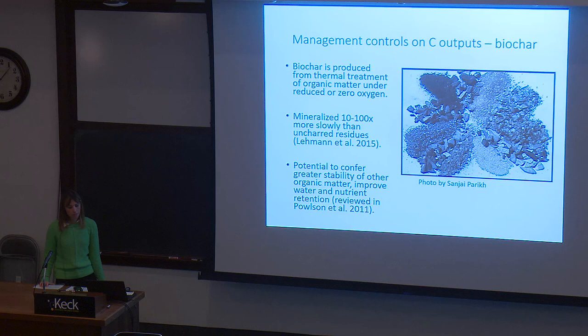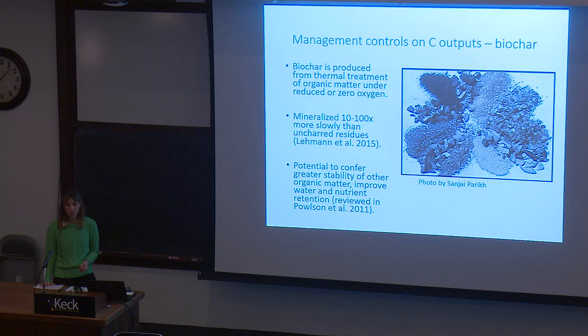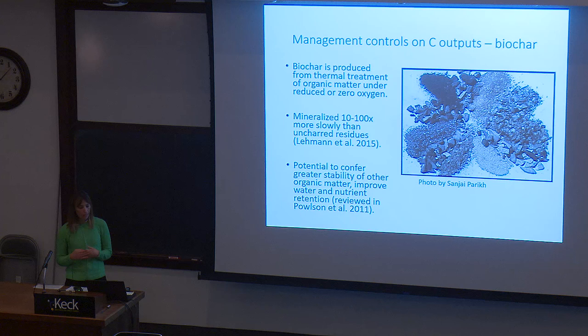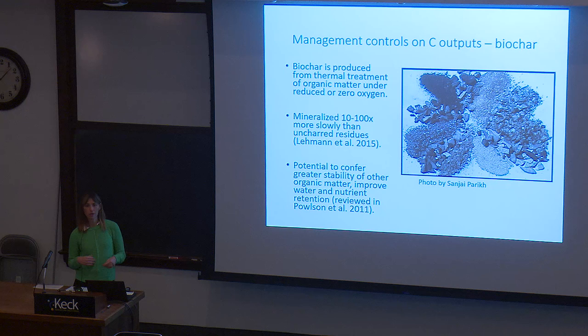Biochar is a material produced through thermal treatment of organic matter under low or zero oxygen conditions, creating a very recalcitrant material that mineralizes 10 to 100 times more slowly than uncharred residue. Adding biochar may also have positive feedbacks, providing better protection for other organic matter in the soil and improving physical properties to enhance carbon inputs from crop productivity.